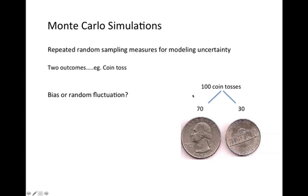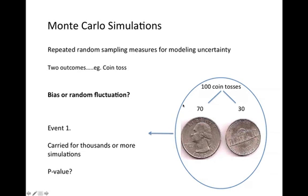To answer this question I will consider this hundred coin toss as a single event and then when this event is carried out across thousands, millions or billions of times, then what is the probability of observing a difference this or higher, which is also known as the p-value.